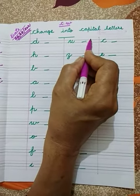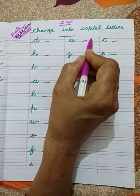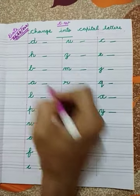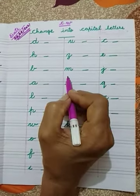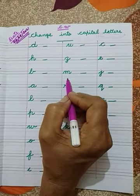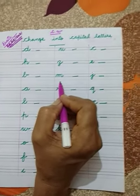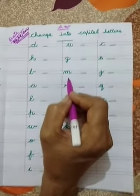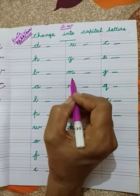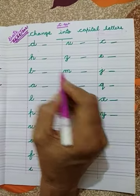We have been given here Cursive Smallities. What we have to do is, we have to write Capitalities for each small letter.